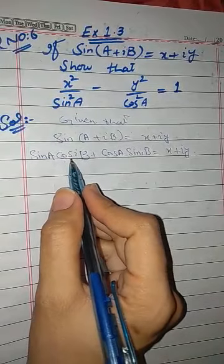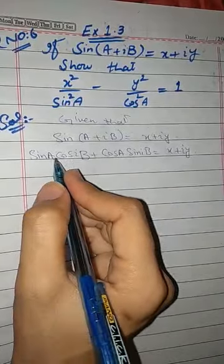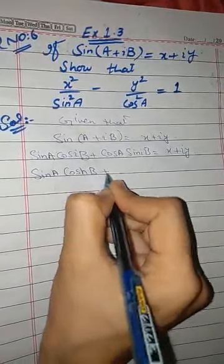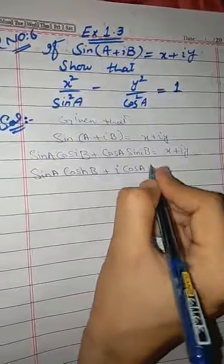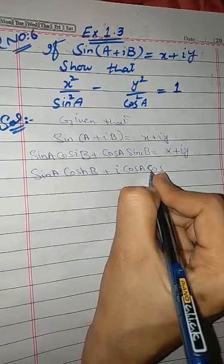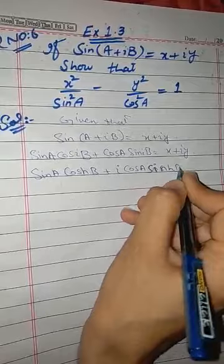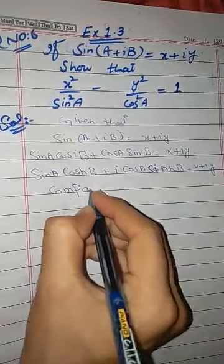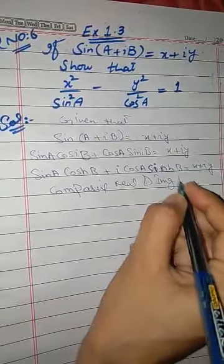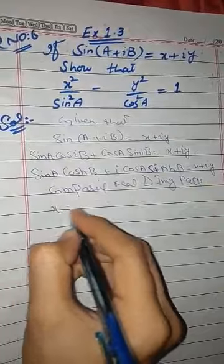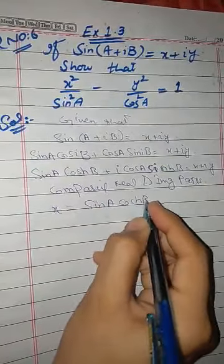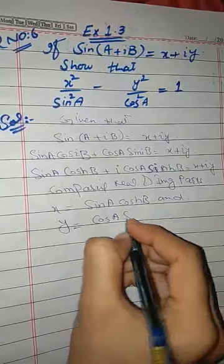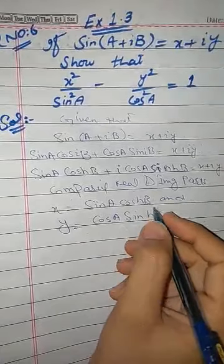Now what do we need to do? We need to change the terms into hyperbolic form. So sin(a)cos(ib) + cos(a)sin(ib) equals x + iy. Now we need to compare real and imaginary parts. The x value will be sin(a)cosh(b), and the y value will be cos(a)sinh(b).